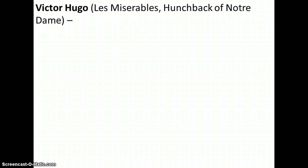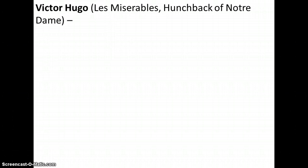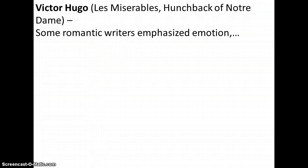Victor Hugo wrote Les Misérables and The Hunchback of Notre Dame. He was a Frenchman, and in his works he talks about the revolutionary spirit — because the revolution was going on during this time — and the struggles of the individual versus hostility. In Les Misérables, it's Jean Valjean struggling against people who don't think ex-convicts can make it in the world. And for The Hunchback of Notre Dame, it's the struggle against the hostility of people who think he's a monster.